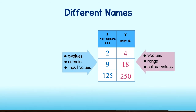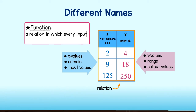You might recall that this table can be thought of as a relation, or a set of ordered pairs. Well, this is where the term function comes into play. A function is just a relation in which every input has exactly one output. What this means is that every input value, or member of the domain, will only pair with one output value, or member in the range. If it has more than one pair, then it is not considered a function.